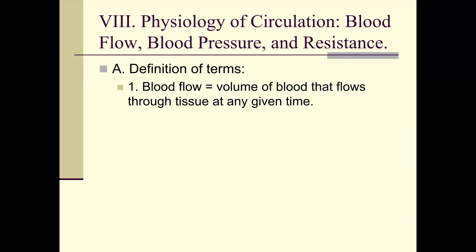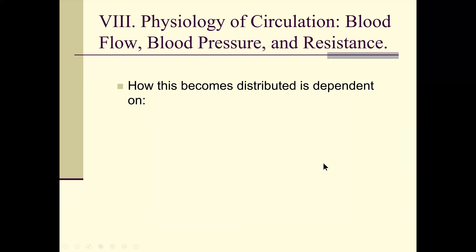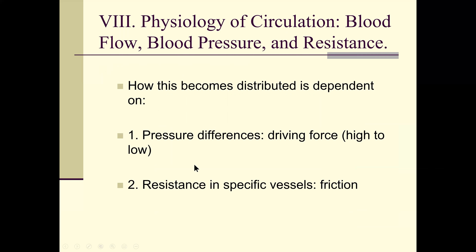Definitions: blood flow is the volume of blood that flows through tissues at any given time — the perfusion rate. Cardiac output equals heart rate times stroke volume; stroke volume is usually 70 milliliters. How this becomes distributed depends on pressure differences. Resistance is how much friction there is — from plaques if someone has cholesterol buildup, or from meta-arterioles that have contracted to reduce flow to a capillary bed.